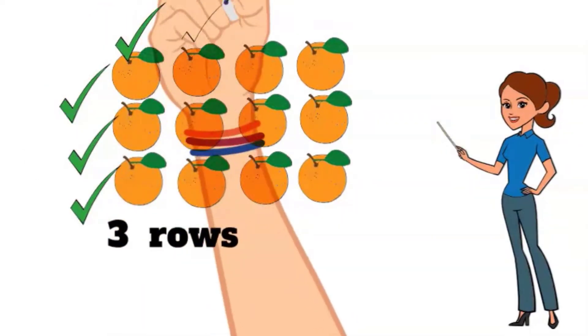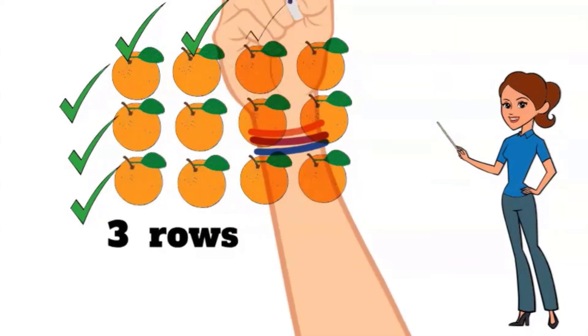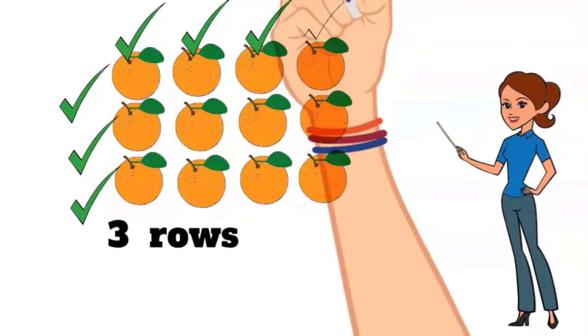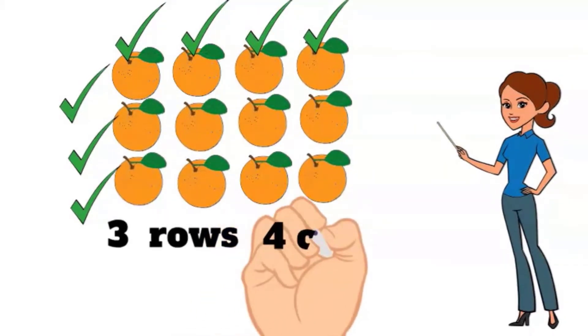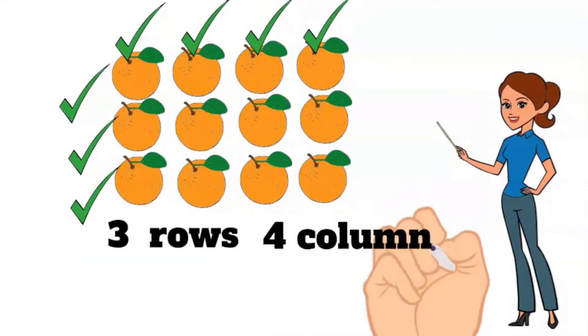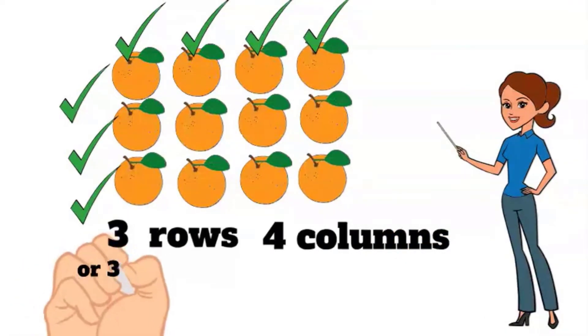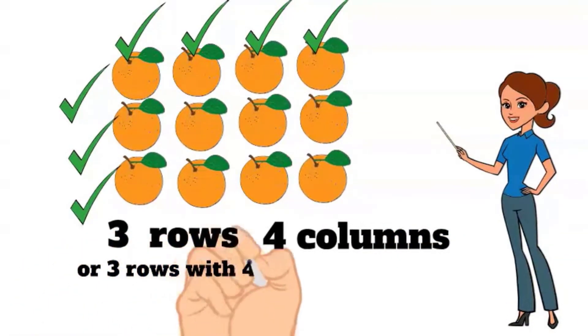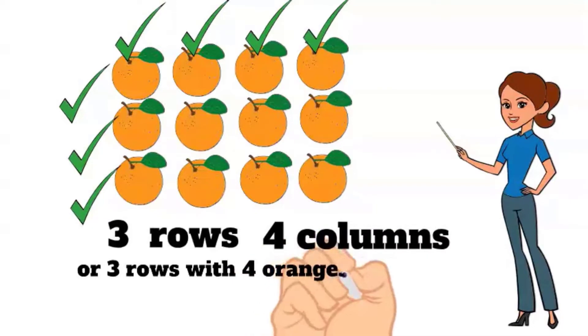How many columns do you see? One, two, three, four. Four columns. Or three rows with four oranges in each row.